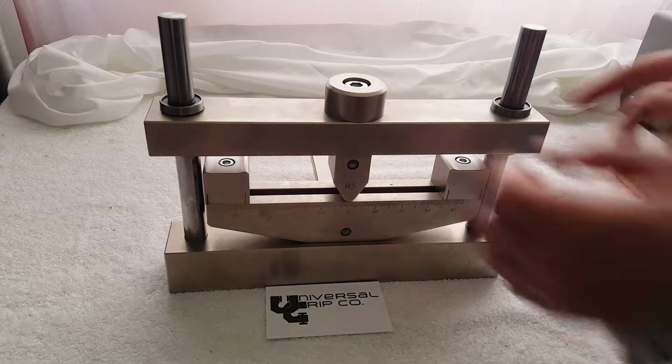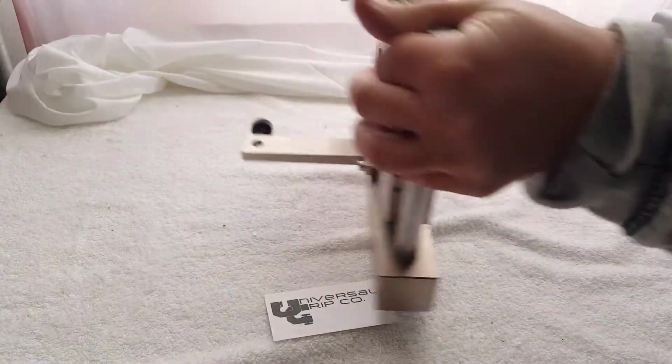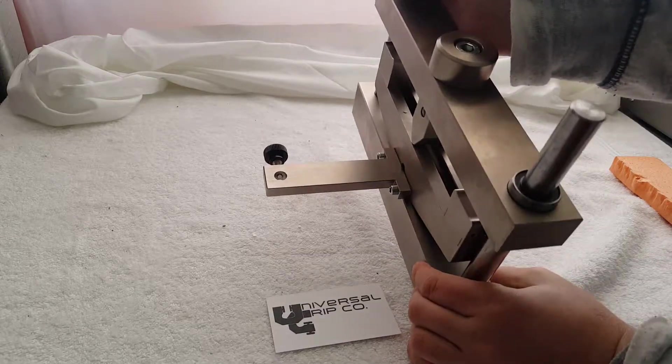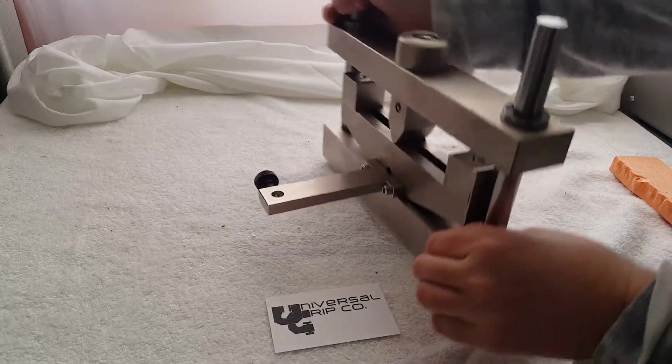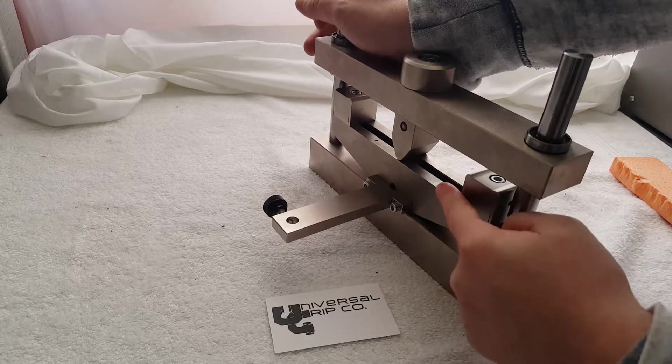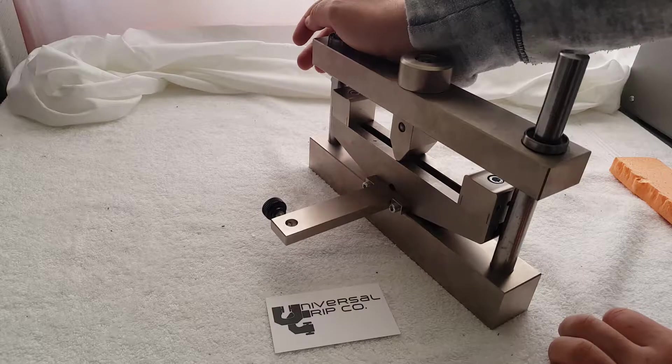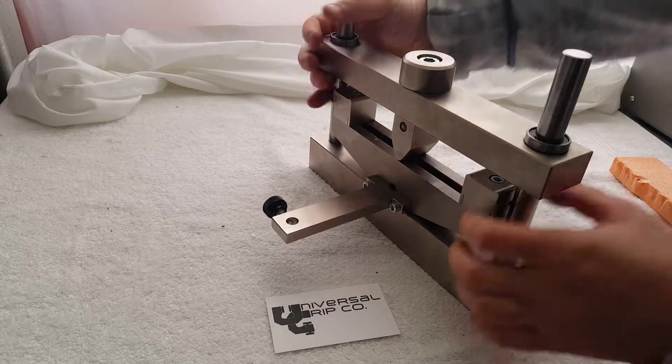Nice thing about this fixture too is that it also includes an extensometer holder. So here we can mount an extensometer. They're most commonly mounted in the back, but this and the entire fixture can be flipped around if needed by disassembling it.